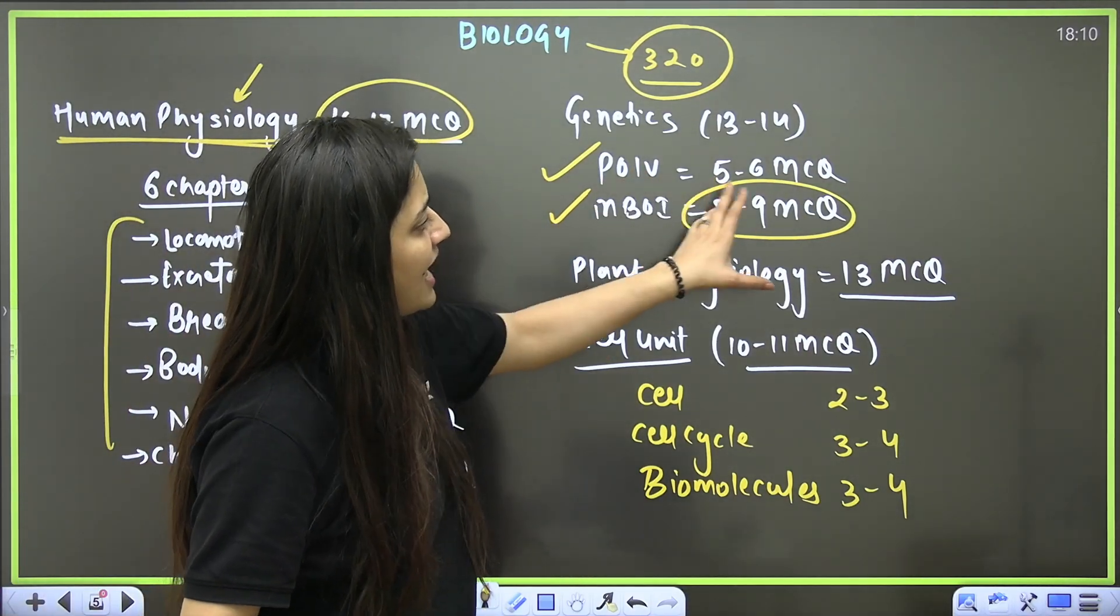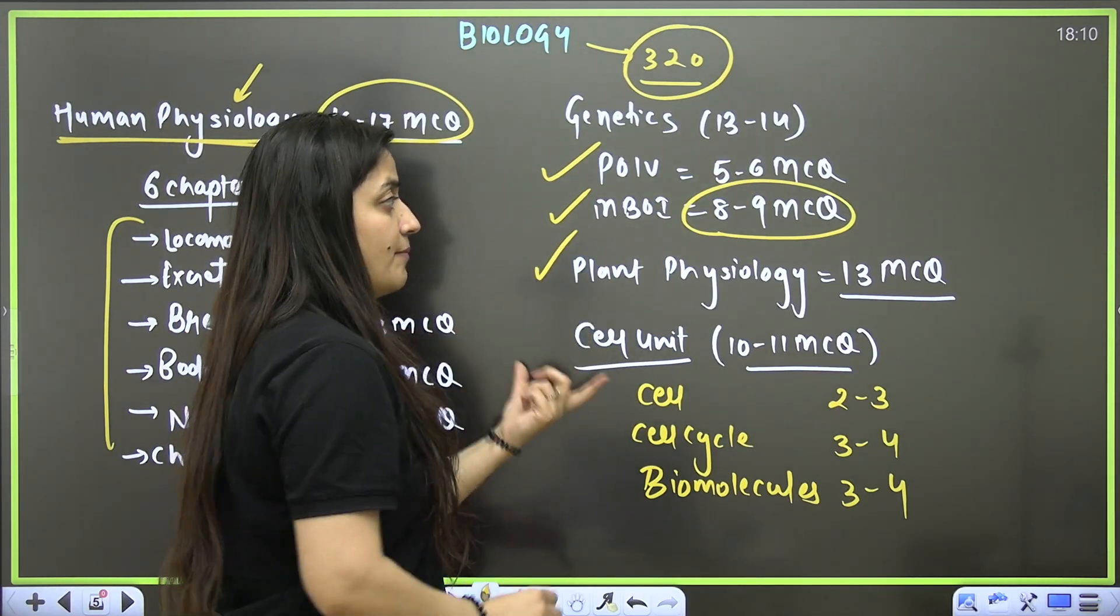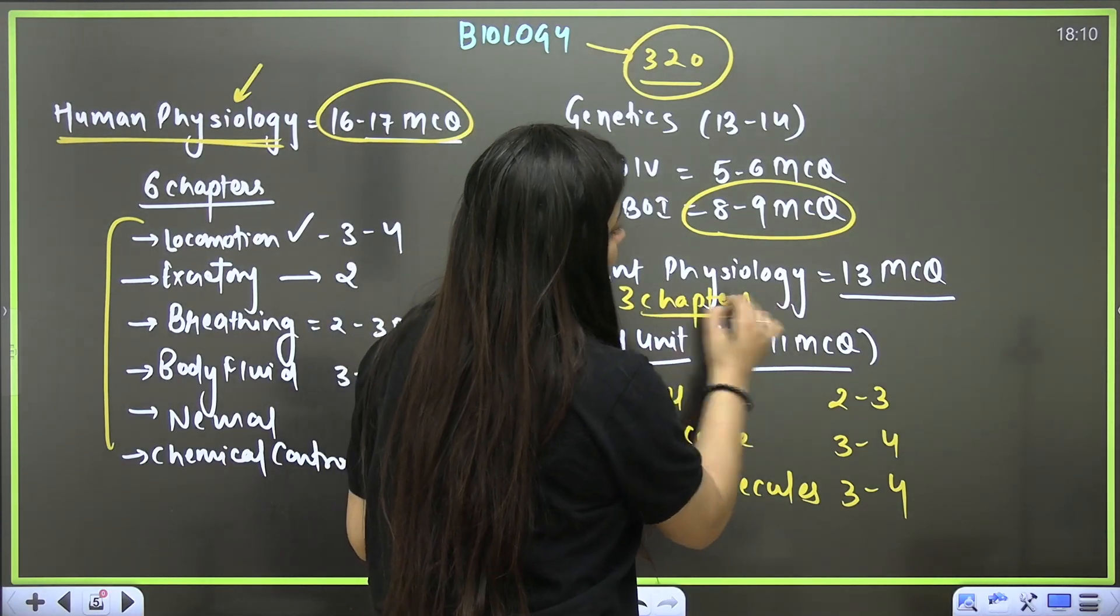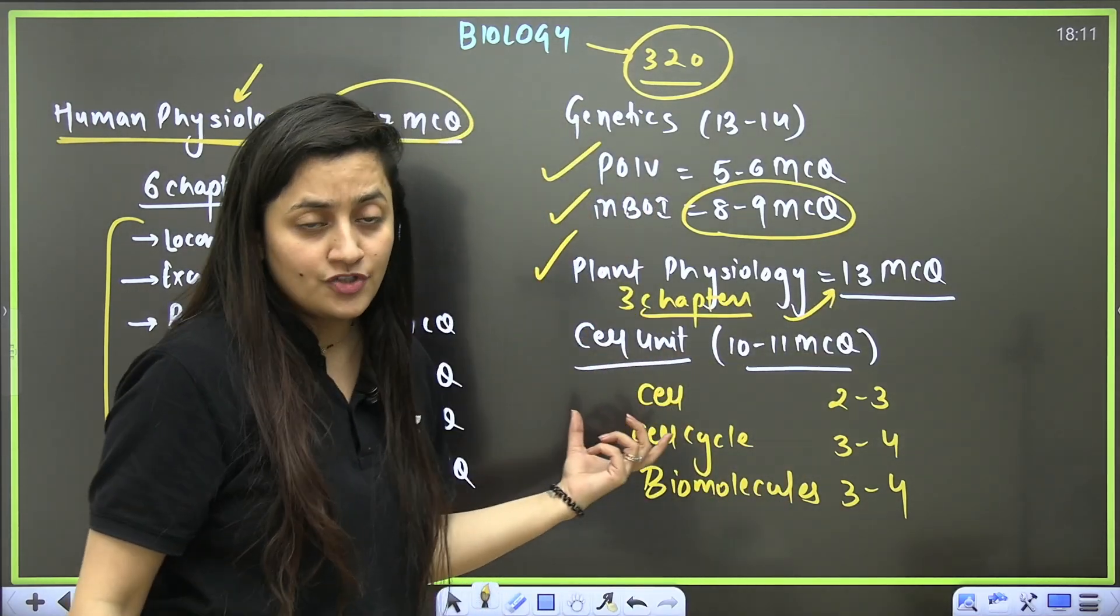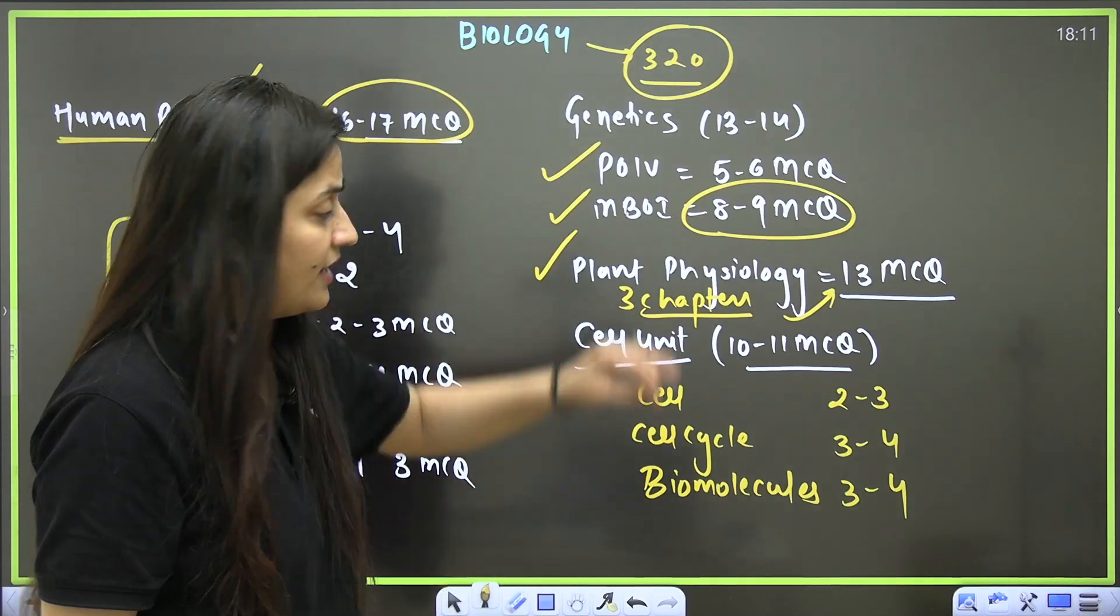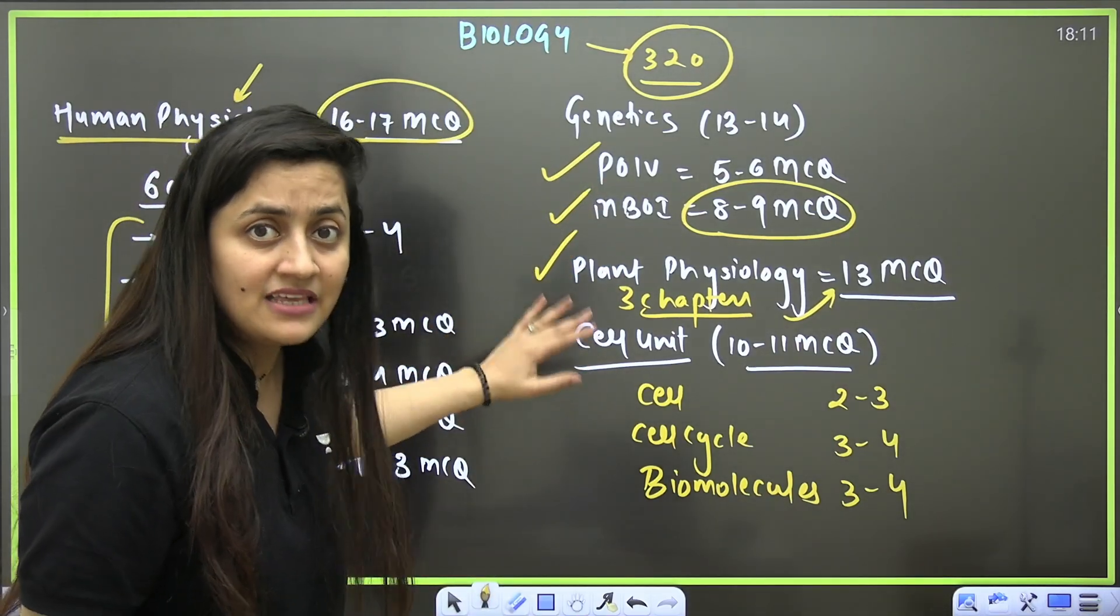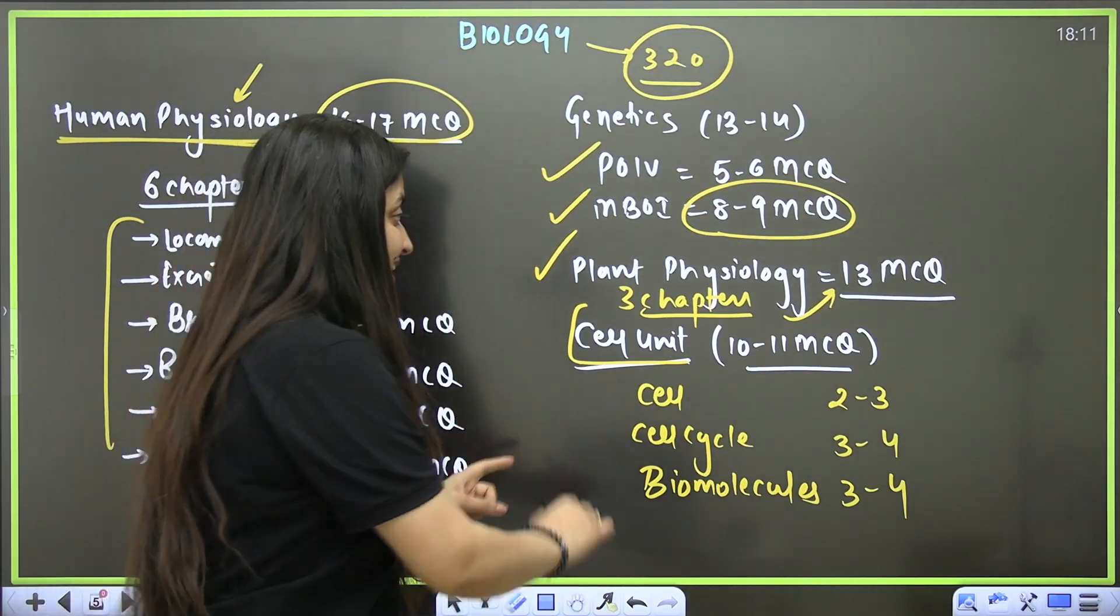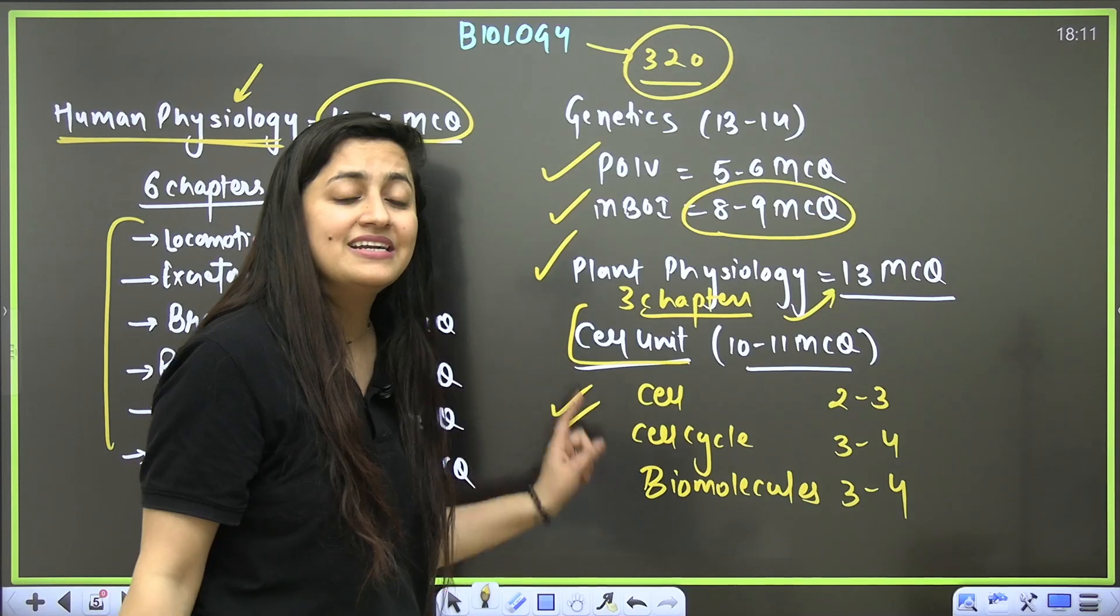Plant physiology—three chapters, and that three chapters can give you 13 MCQs. Make sure you watch it, and you can follow my lectures here on Unacademy NEET English. Trust me, the content is appropriate. You are not going to get anything beyond that lectures. Then cell unit—the complete unit is important. It's simple, scoring, and helpful for understanding other chapters also.